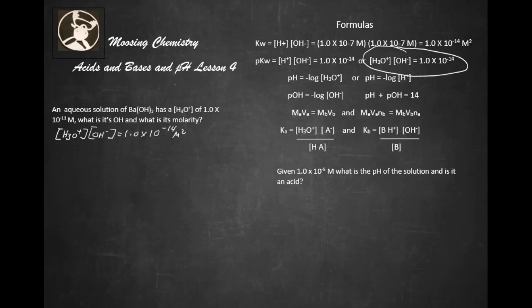Alright, so now let's go ahead and put in our information. We know the H3O+ ion, so we're going to go 1.0 times 10 to the negative 11 M times the OH- ion. This is so easy. 1.0 times 10 to the negative 14.